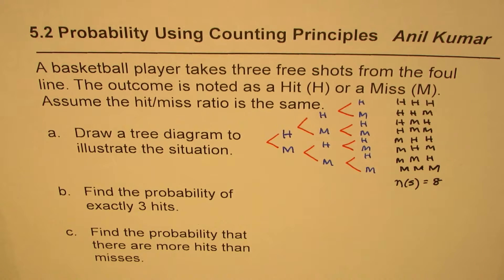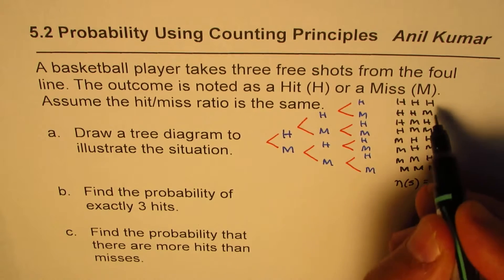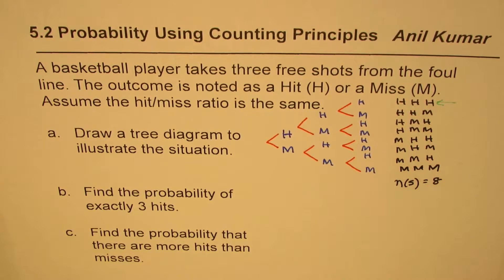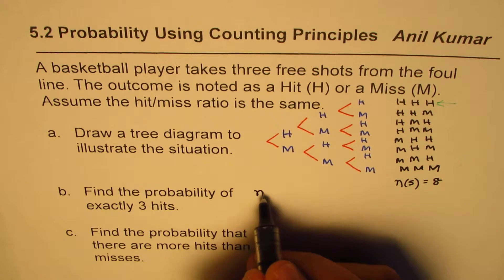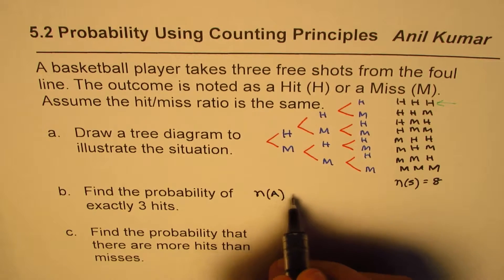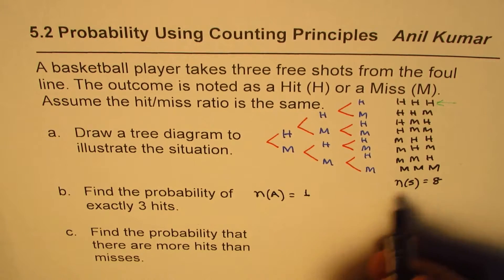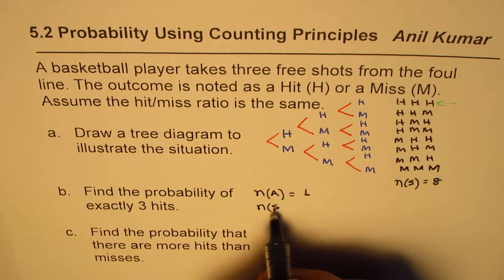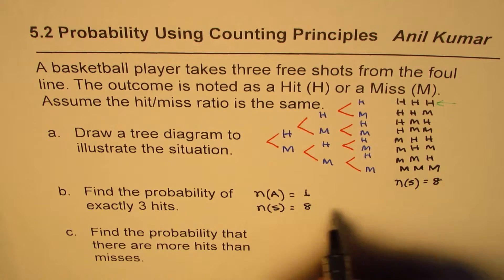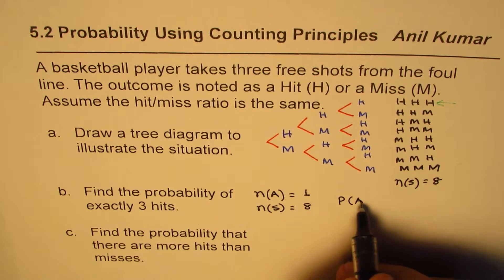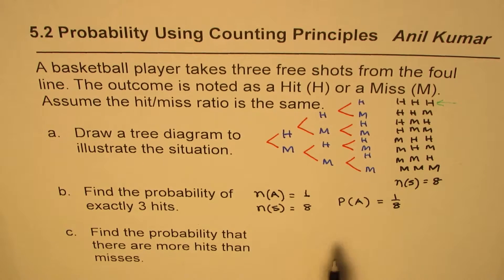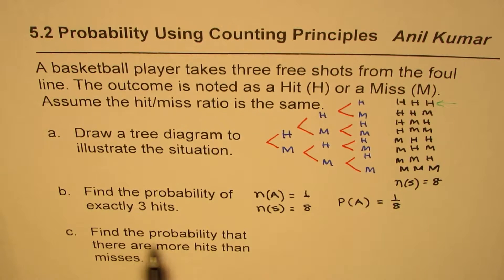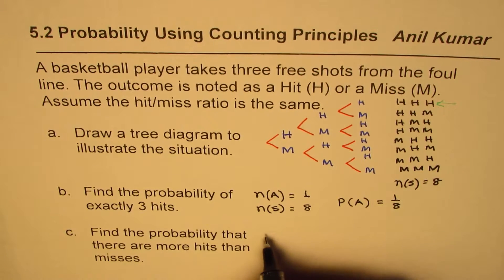Now, find the probability of exactly three hits. In this case, exactly three hits, there's only one way — that is HHH. So the number of favorable outcomes is 1, the total possible outcomes is 8, and therefore the probability of exactly three hits is 1 out of 8.